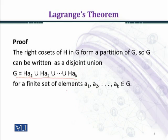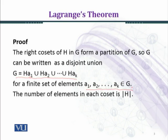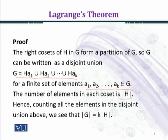For a finite set of elements a₁, ..., aₖ in the group G, the number of elements in each coset is order of H. We have proved this. Hence, counting all the elements in the disjoint union above,